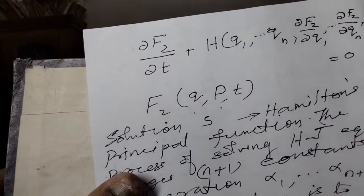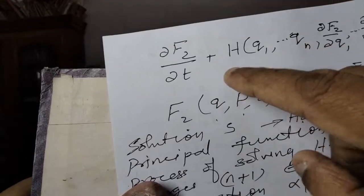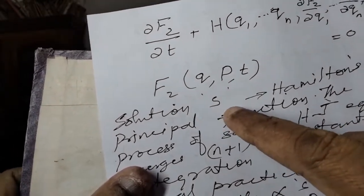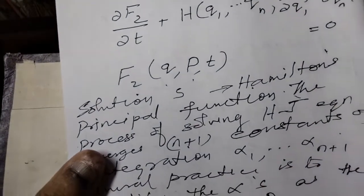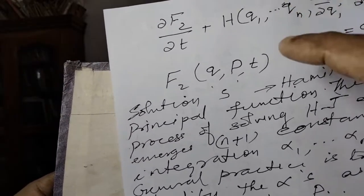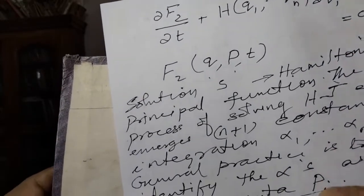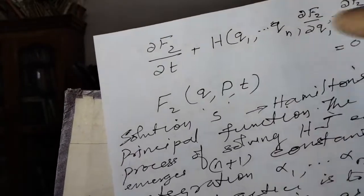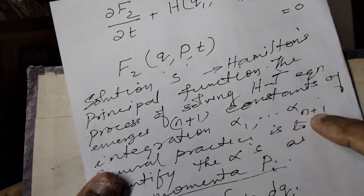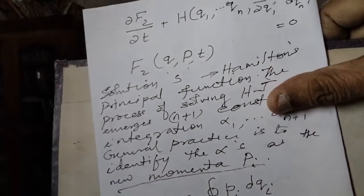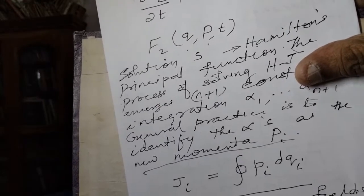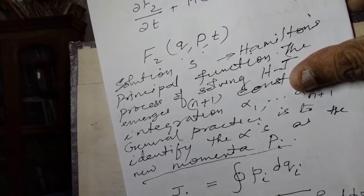This is the solution — this is the n variables. This is the differential equation and its solution. This is Hamilton's principal function. This is the n variables q1, q2, ..., qn. The solution has n+1 constants of integration: alpha 1, ..., alpha n+1. This is the constant of integration of the differential equation. The constant of integration is a dimensional quantity.